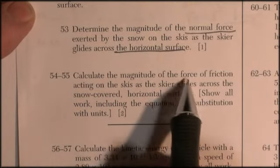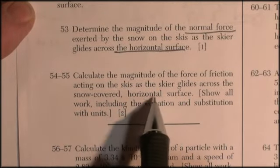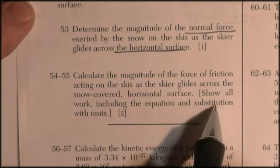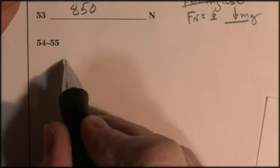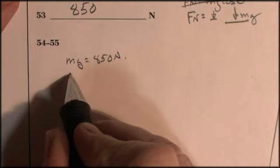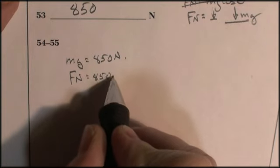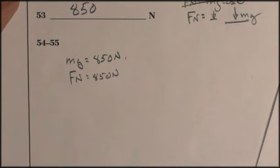Question 54 and 55 asks you to calculate the magnitude of the force of friction acting on the skier as the skier glides across the snow-covered horizontal snow. Show all work including the equation substitution with units. So we're told that Mg, the weight, is equal to 850 newtons. And because that's the perpendicular force, we're on a horizontal surface. That's also the force normal, 850 newtons.